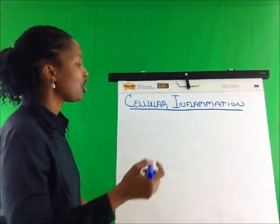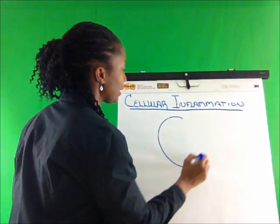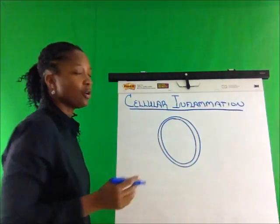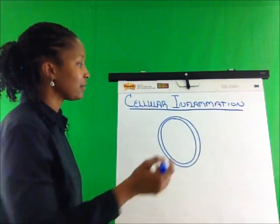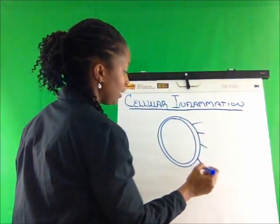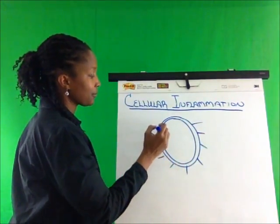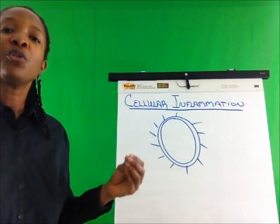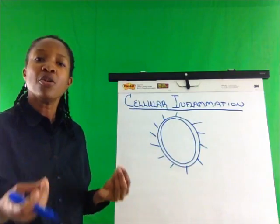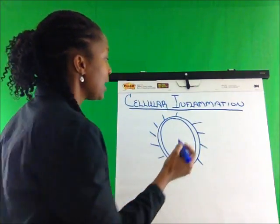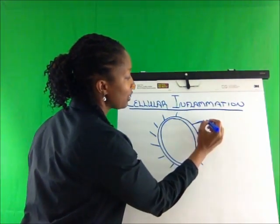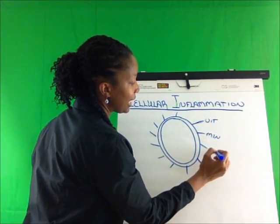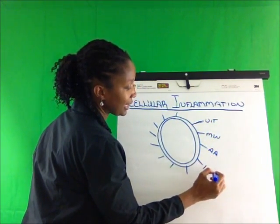So first let's draw a healthy cell. A healthy cell has a lipid bilayer or two walls of fat and then we have these receptors. Now in a healthy cell, food is broken down into components that the cell can use and each of these receptors we have: vitamin, mineral, amino acids, and hormones like insulin.